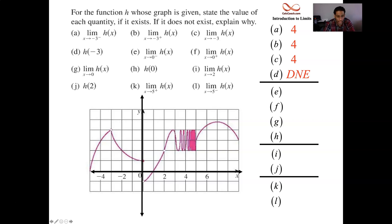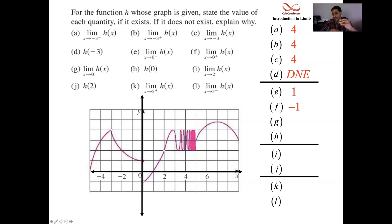Let's look at x equals 0. As x goes to 0 from the left for letter E, the function is going towards 1. As x goes to 0 from the right for letter F, the function is going towards negative 1. The left-hand and right-hand limits don't agree, so in letter G, when we're asked for the limit as x goes to 0 without any indication of left or right, we have to answer that the limit does not exist.